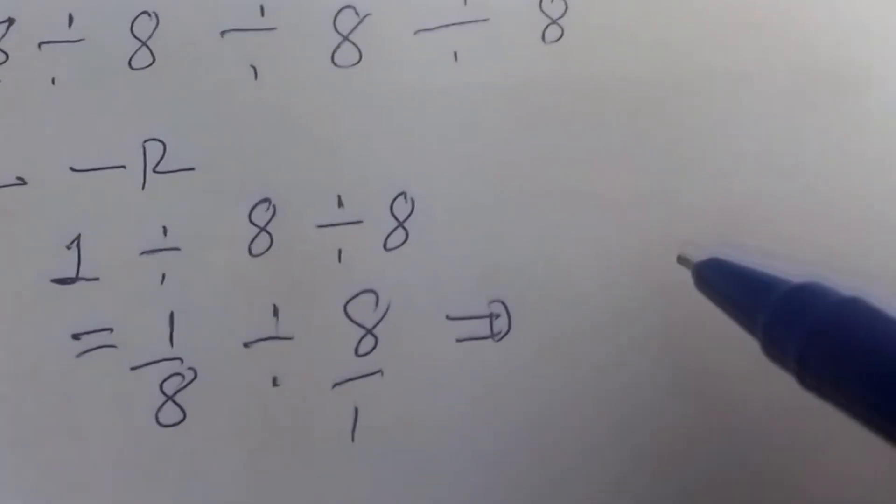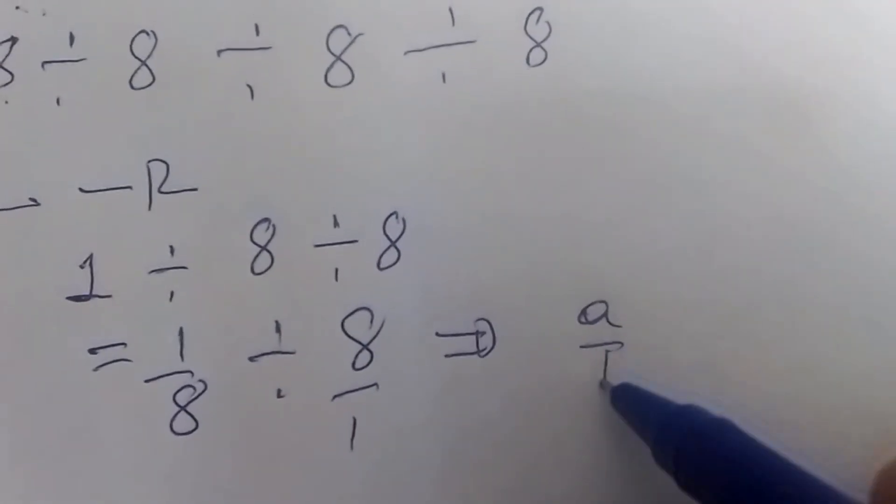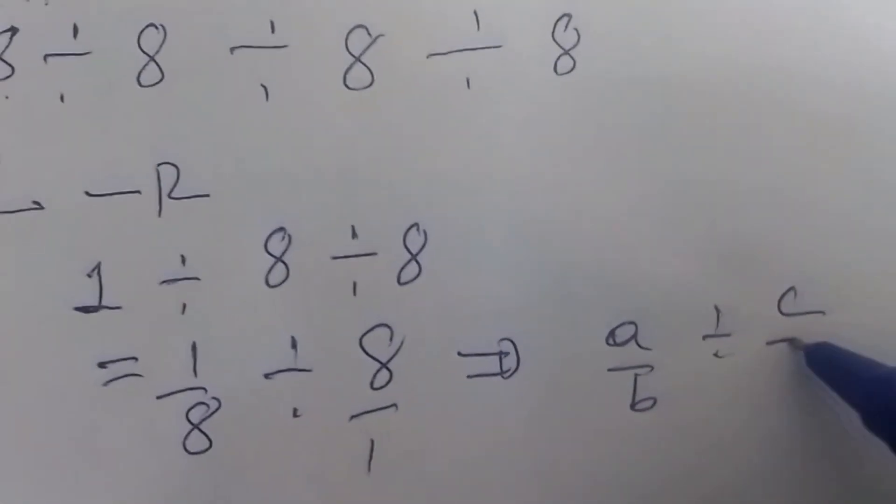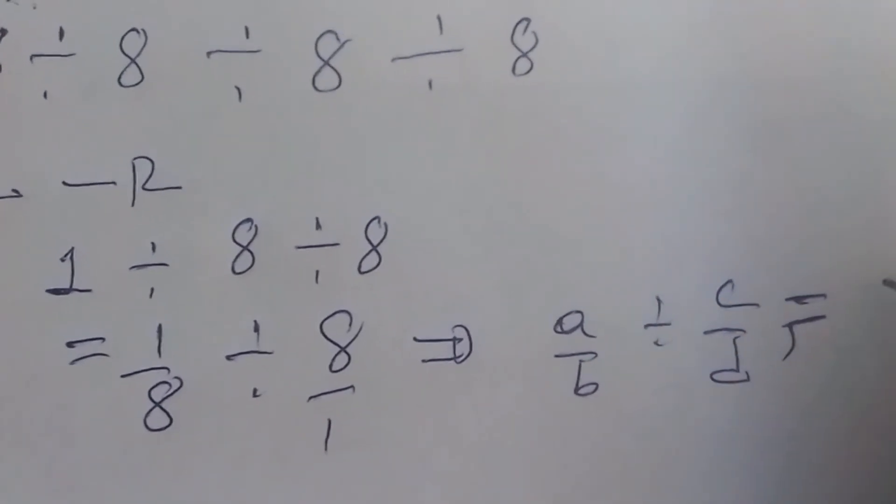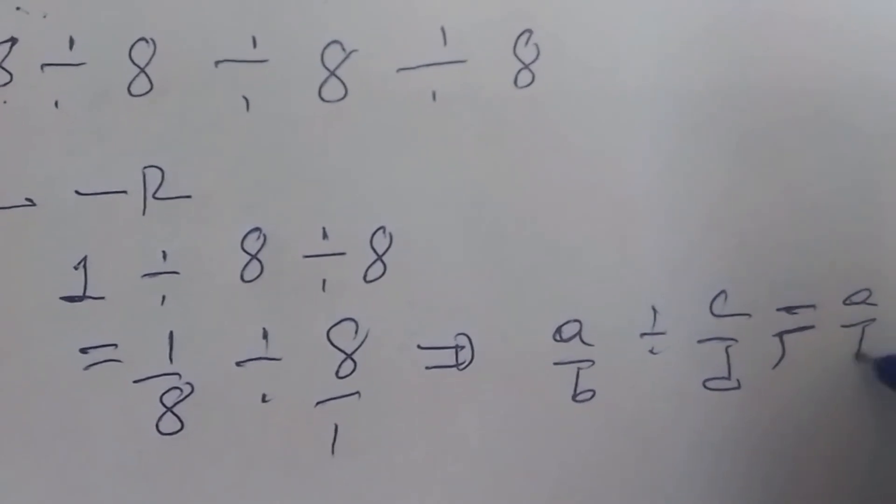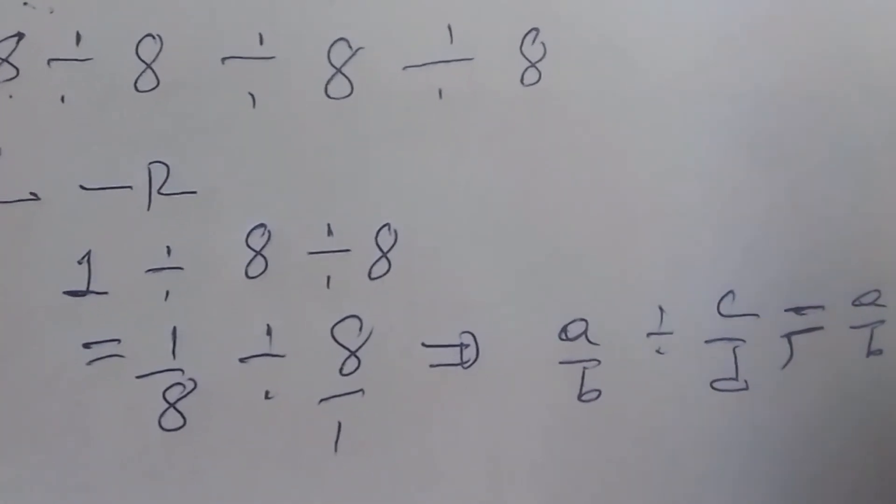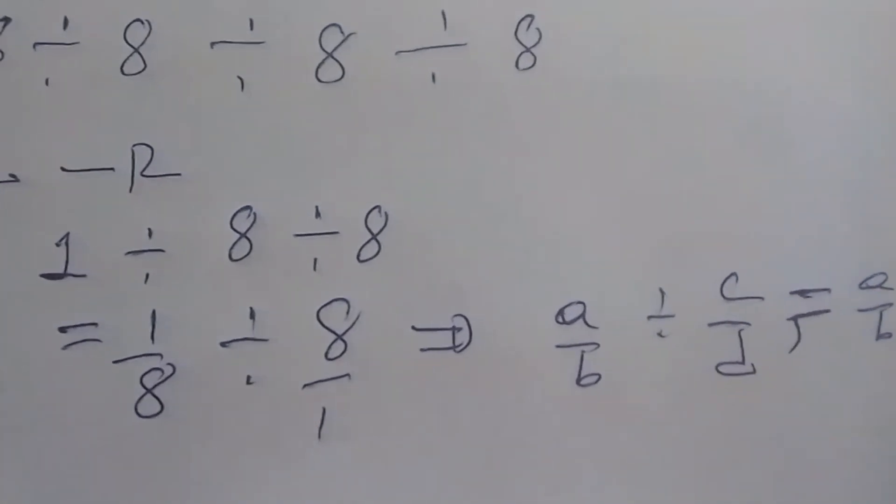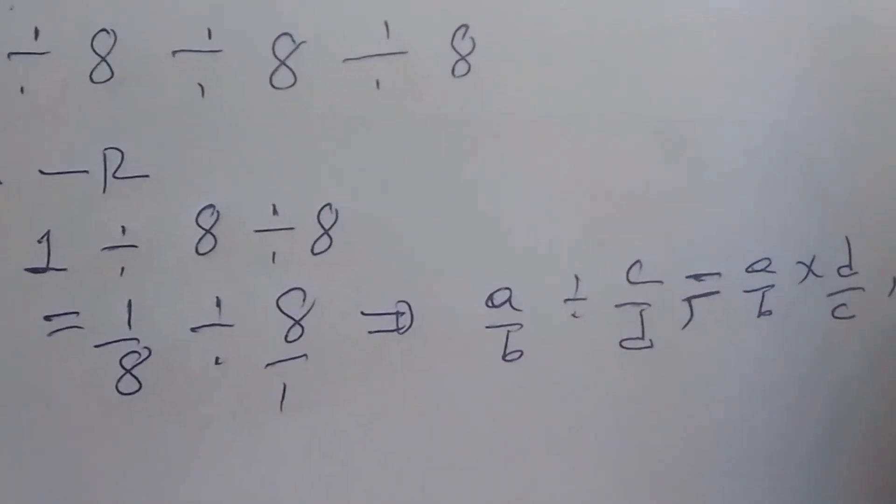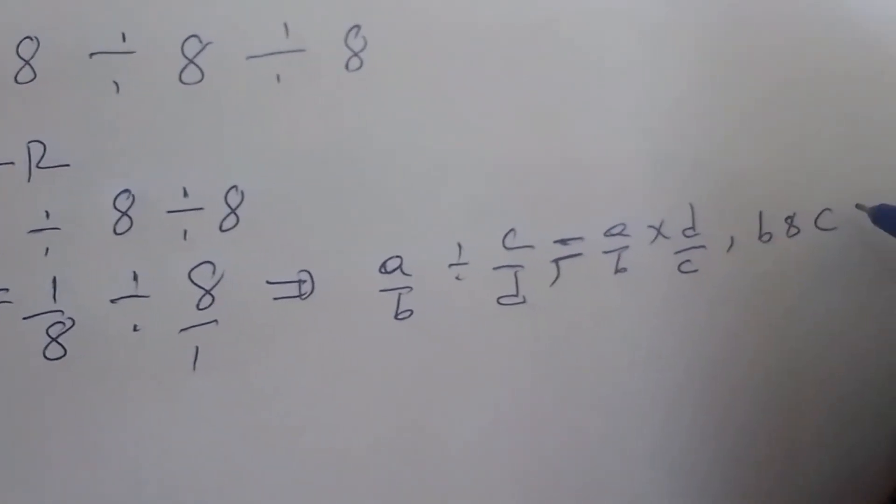By the rule of a over b divided by c over d, can be written as a over b times d over c, where d and c are different from 0.